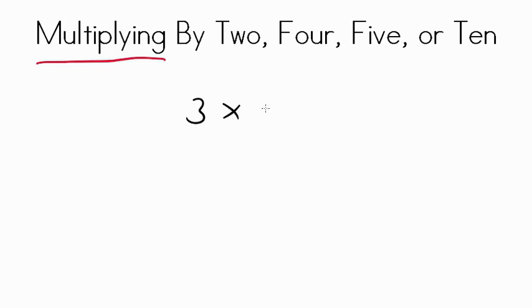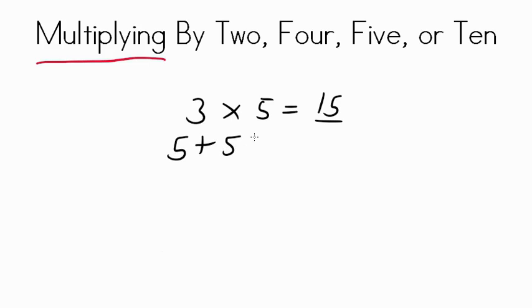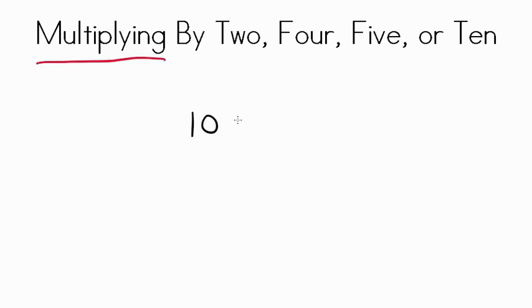Okay, let's review. What would 3 times 5 equal? What's its product? Skip count by 5s. If you got 15, give yourself a pat on the back. Three groupings of 5 — 5 plus 5 plus 5 — equals 15. Let's do another: how about 10 times 6? We haven't multiplied by 6s, but remember the rule — you can reverse it and then multiply using your 10s and skip counting. See if you can figure that out and we'll walk right through it.